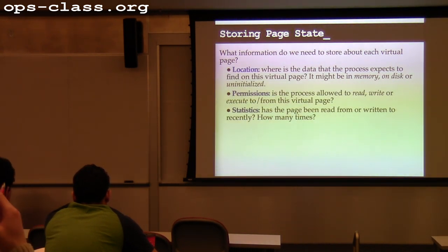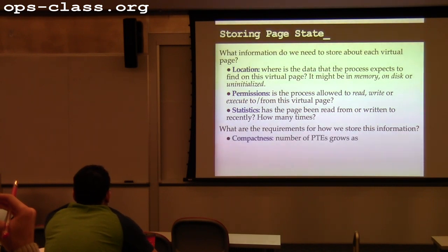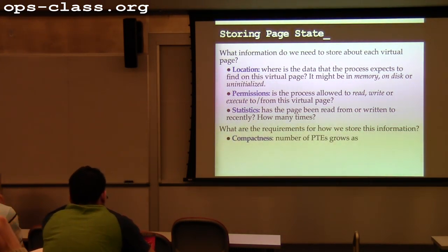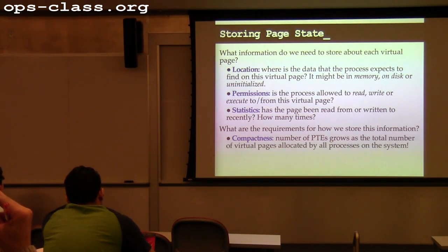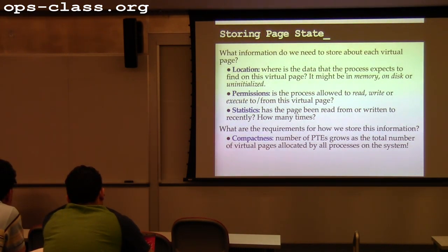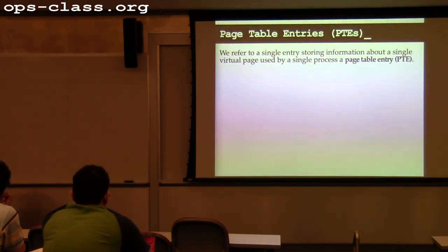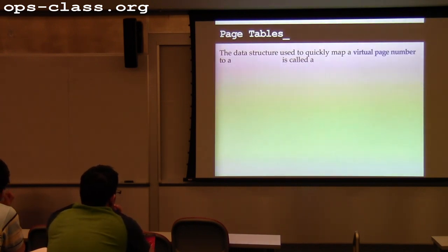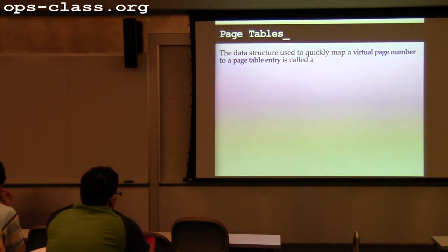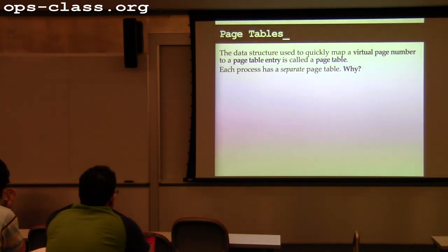The requirements for storing this information: we want to make it as compact as possible, because the number of page table entries grows with the total number of virtual pages allocated by any process on the system. The page table is the data structure used to quickly map a virtual page number to a page table entry. These are per-process data structures.